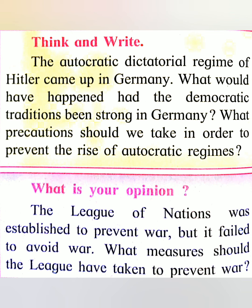To summarize, we have seen how the First World War took place, how the world was divided into Allied and Central powers, the tremendous losses of life and property, the establishment of the League of Nations to bring peace, and how the League failed. Autocratic regimes emerged in Germany, Italy, and Spain, which culminated in the Second World War. In the next lecture we will study the Second World War — please read the topic and prepare yourself. Goodbye and all the best!